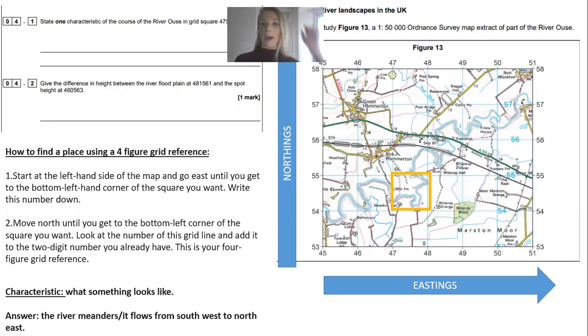This is the first question we're going to go over. Above the map it says you need to study Figure 13, which is a 1 to 50,000 Ordnance Survey map, meaning one centimeter on the map is 50,000 centimeters in real life. It's of the River Ouse in the UK. You need to state one characteristic of the course of the River Ouse in grid square 4754, and it's only worth one mark, so it should take you only one minute in the exam.